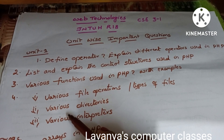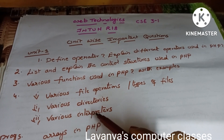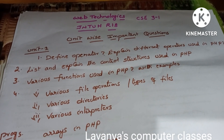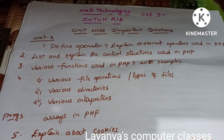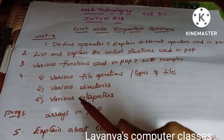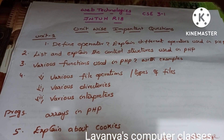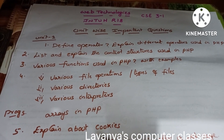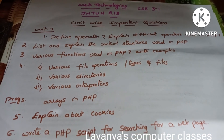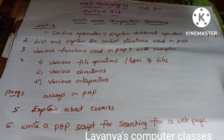Next, explain various directories and explain about various interpreters available in PHP. In unit 1 there are also programs - you have to learn these programs like write programs using arrays in PHP, and explain about cookies - this is also an important question. Next, write a PHP script for searching for a web page.